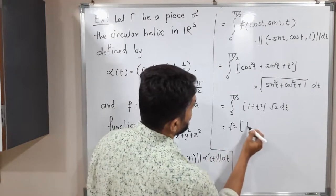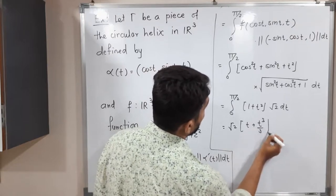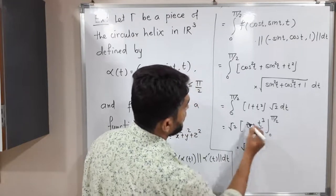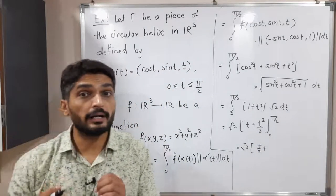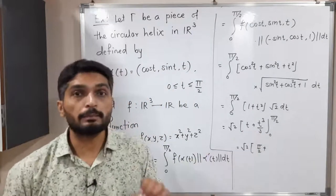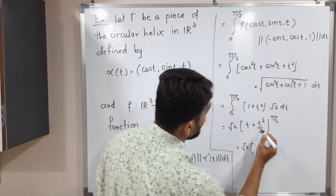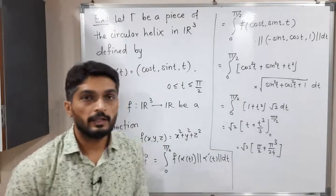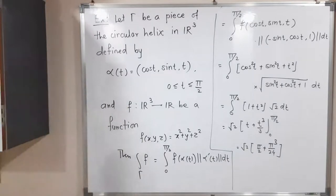Evaluating the limit: root 2 times [pi by 2 plus (pi by 2) cubed over 3]. The cube of pi by 2 is pi-cubed by 8, divided by 3 gives pi-cubed by 24. Putting 0 gives 0. So the required value of the line integral of F over the given curve gamma is root 2 times (pi by 2 plus pi-cubed by 24). Problem is complete — make a screenshot of it.